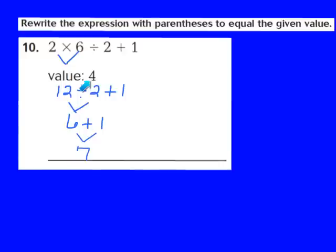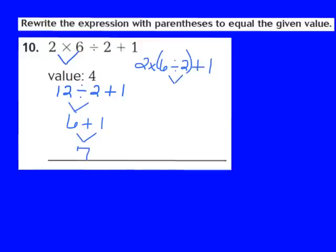I know that 7 is not the value I'm looking for — I'm trying to get to 4. I need to think about how I could place parentheses to decrease the value. I could try placing parentheses around 6 divided by 2, since 6 divided by 2 is less than 2 times 6. Following order of operations, I solve the parentheses first: 6 divided by 2 gives me 3. Now I have 2 times 3 plus 1.